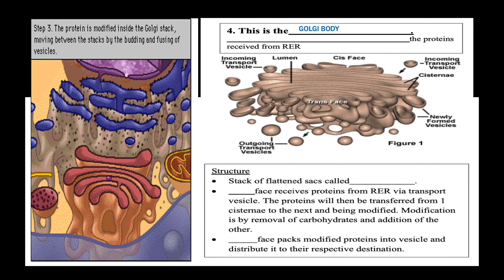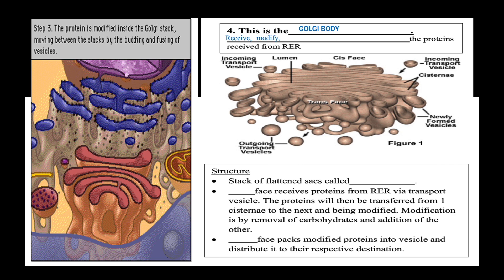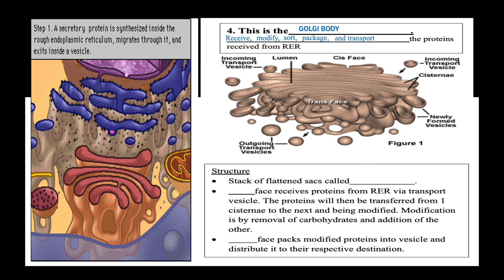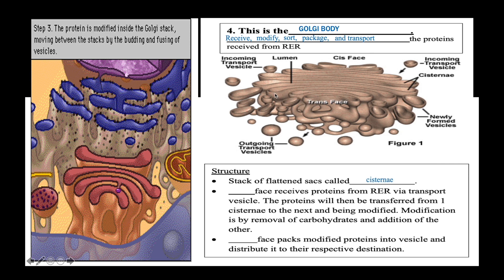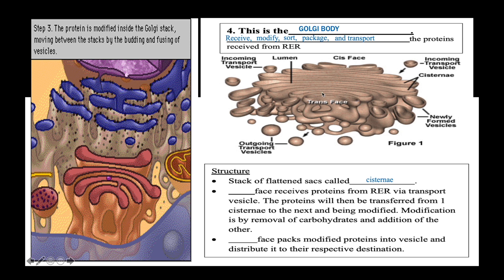This is the Golgi apparatus, or Golgi body. As discussed when learning about the endomembrane system, the Golgi body receives protein from the rough endoplasmic reticulum, modifies it, sorts it based on its destination, then packages and transports it. The Golgi body consists of a stack of flattened sacs called cisternae. There are two faces: the cis face receives incoming transport vesicles from the rough endoplasmic reticulum, and the trans face packages the modified proteins into vesicles and transports them to their respective destinations.